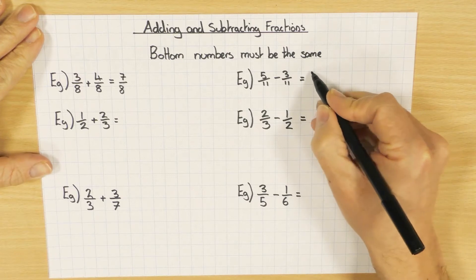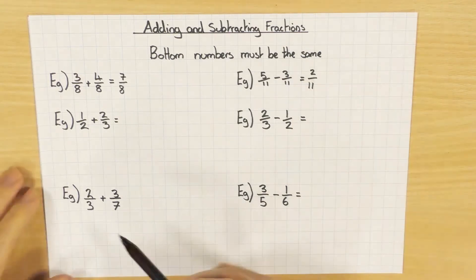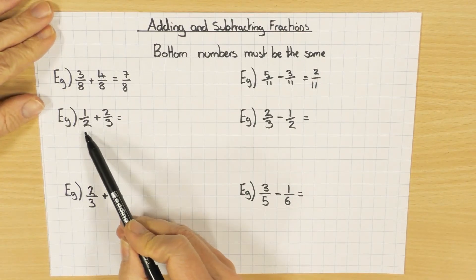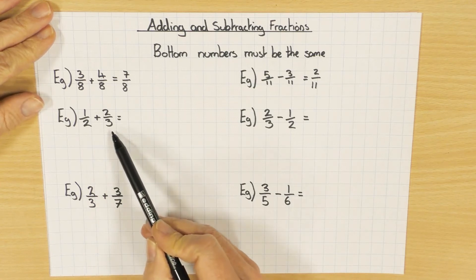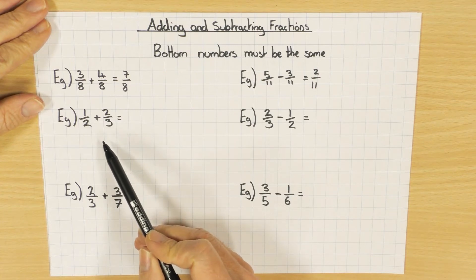If they're not the same though, we've got to do something about that. So we've got to make the bottoms the same. We look at the two times table, we look at the three times table, and we find a common multiple that two and three go into. It doesn't have to be the lowest common multiple, but the lower it is the easier it should be.